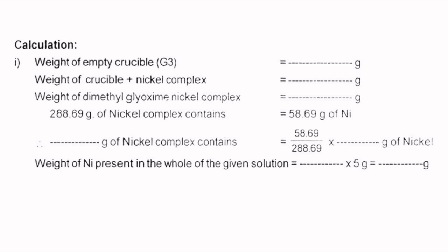Now let us discuss the calculation involved in estimation of nickel. Weight of empty crucible is equal to x gram. Weight of crucible plus nickel complex is equal to y gram. Therefore, weight of dimethyl glyoxime nickel complex is equal to y minus x gram. Since 288.69 gram of nickel complex contains 58.69 gram of nickel, we can calculate that y minus x gram of complex contains the corresponding weight of nickel. From this, the weight of nickel present in the whole of the given solution is obtained by multiplying by 5.